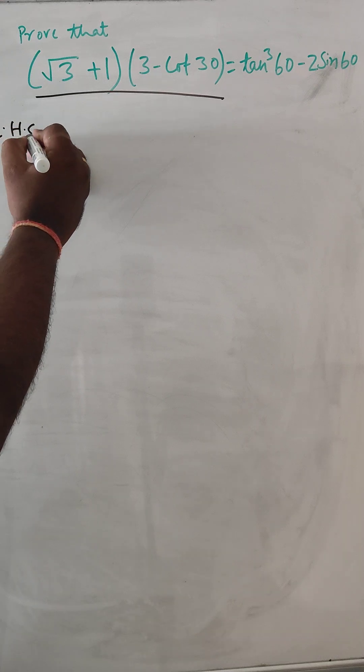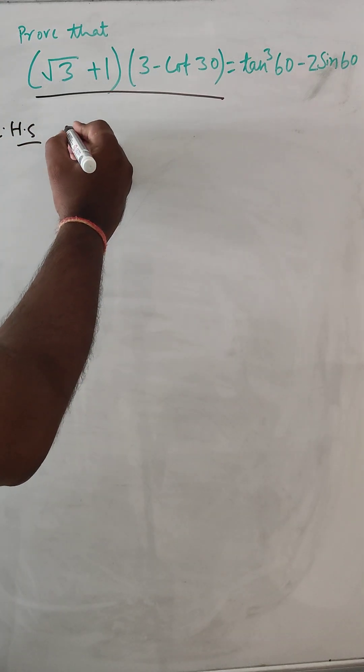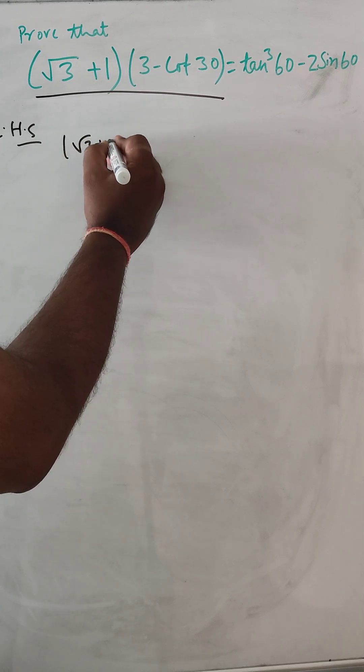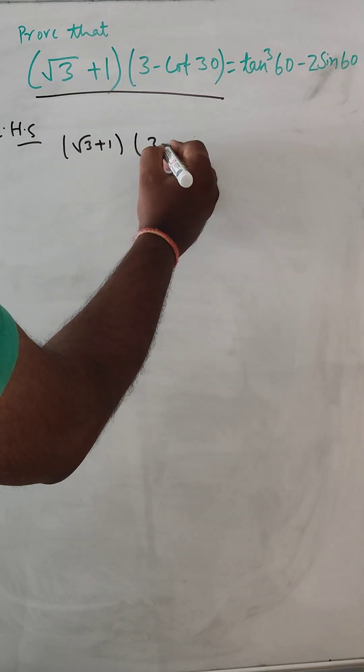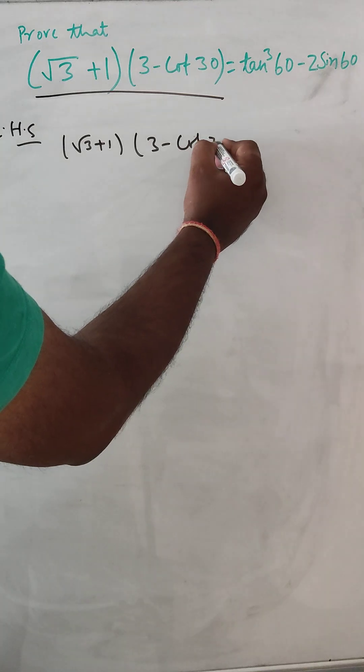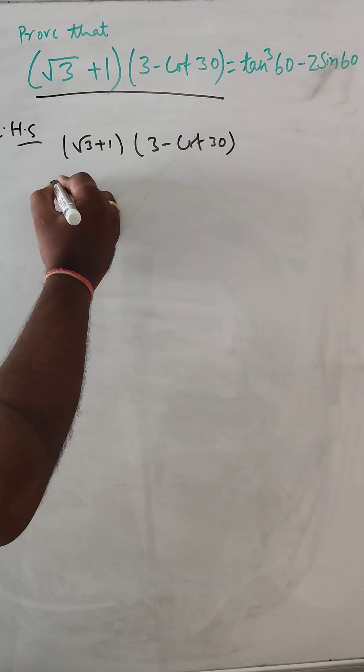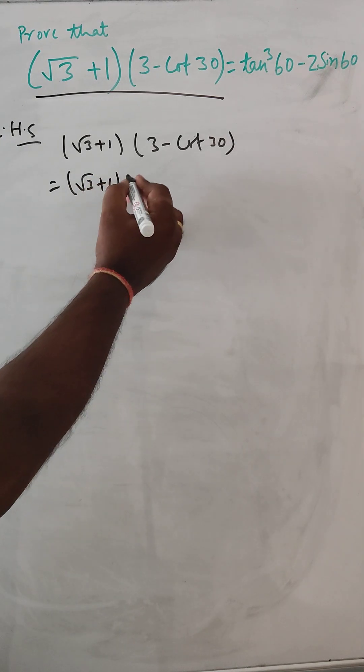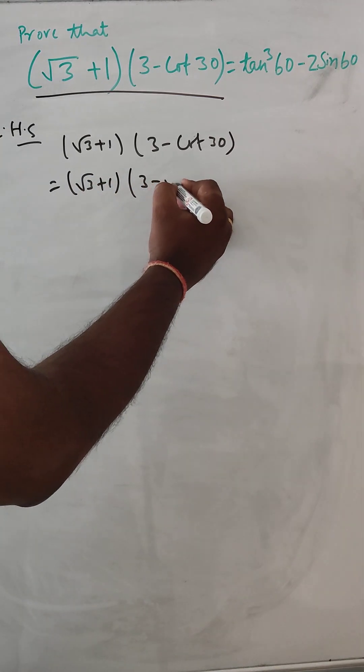So first let this one be LHS. We are taking LHS first here, root 3 plus 1 and 3 minus cos 30. So next step, root 3 plus 1 and this is 3 minus root 3.